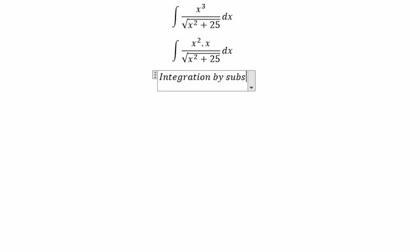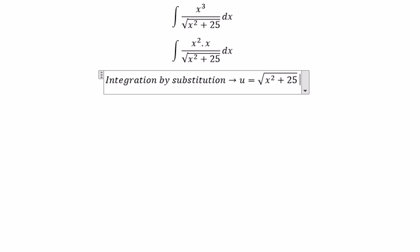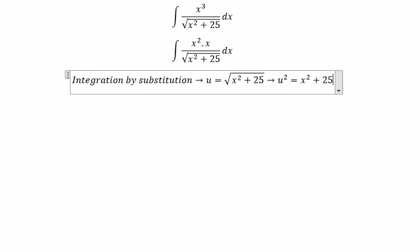Next, we need to use integration by substitution. So we put about u equals to the square root. Later, we put the square on both sides, so we have x squared in here. So we need to find the value of x squared.